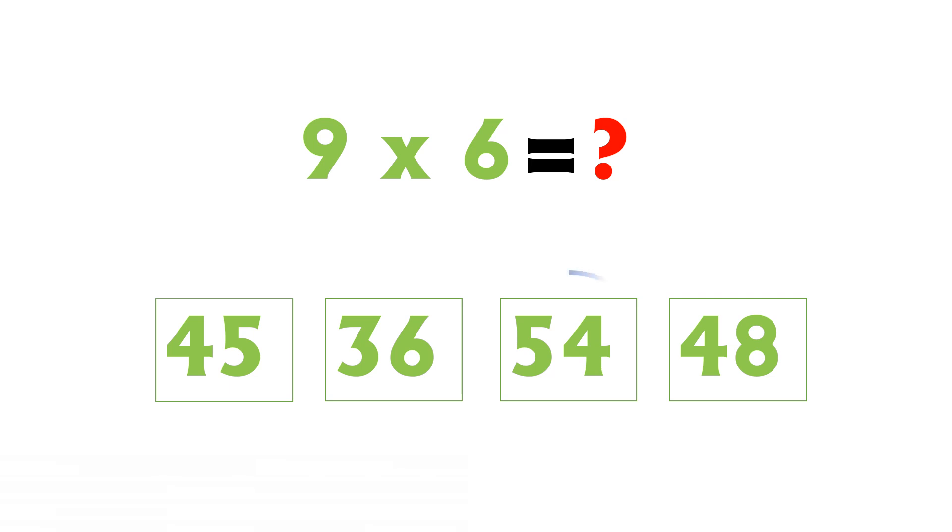one. 9 sixes are 54. 2 eights are, here is the correct answer.